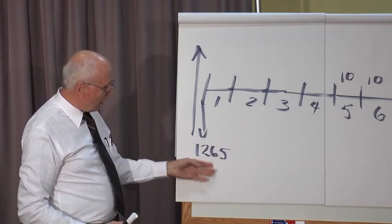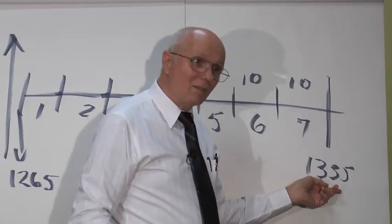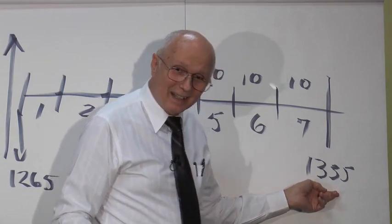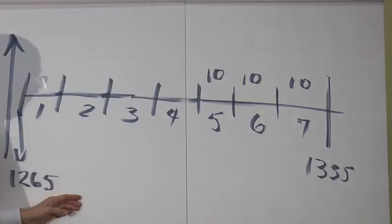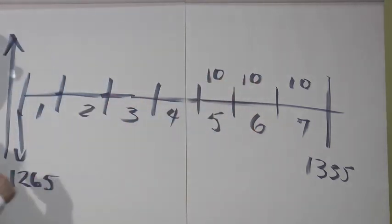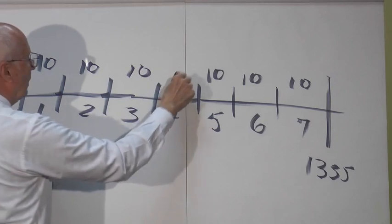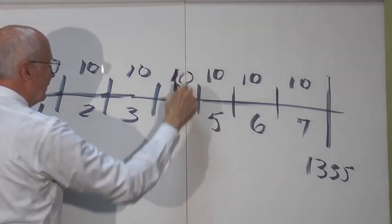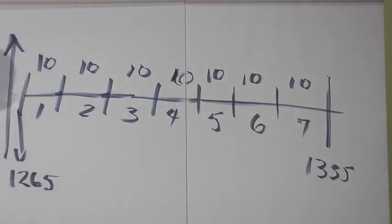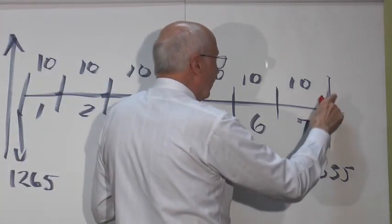So day 1265 is Monday? Day 1335 is Monday. So these are the seven bowls and each one lasts 10 days. 10, 10, 10, 10, 10.